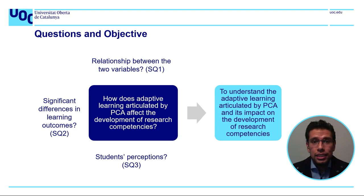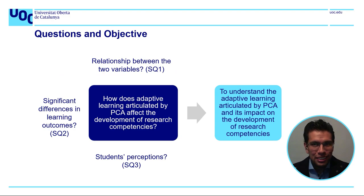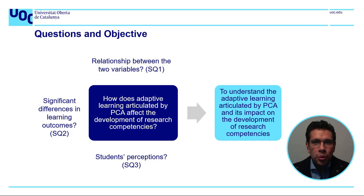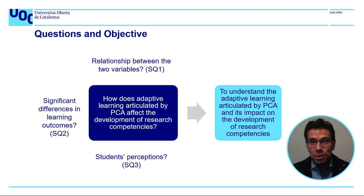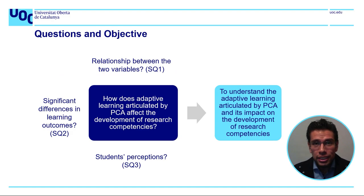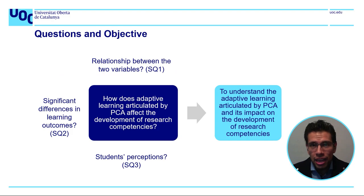The objective is to understand the adaptive learning articulated by PCA and its impact on the development of research competencies. Teachers and readers of the research are the main beneficiaries, as they will know whether there is a relationship between the two variables and whether there are significant differences in learning outcomes. They will also know student perceptions, which are relevant to understanding how PCA works in the online learning environment.